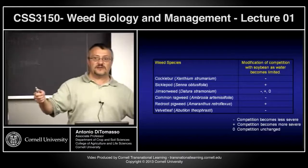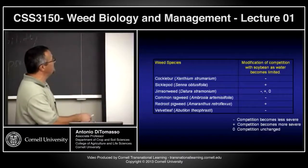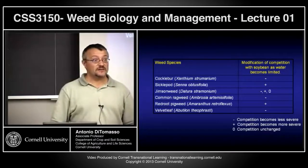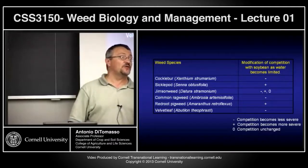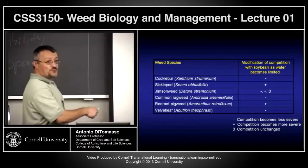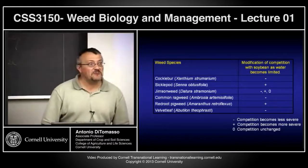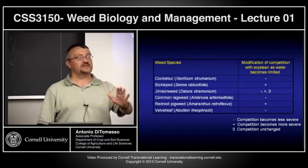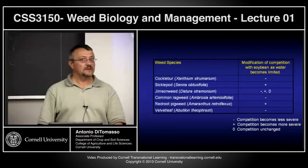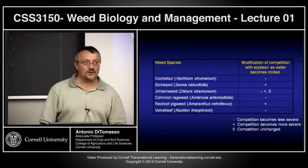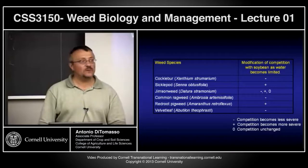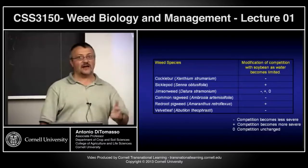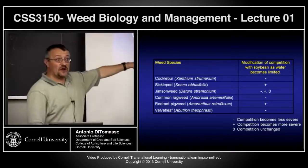Velvetleaf is an interesting case: in a drought year, corn can actually handle it — velvetleaf needs moisture. But when there's plenty of moisture, velvetleaf will wipe out your corn if not removed. In Nebraska and irrigated Midwestern corn, velvetleaf is the number one weed because it loves moisture and outcompetes through light competition. Each weed-crop combination is species-specific; there's no simple generality that all weeds are worse under all conditions.